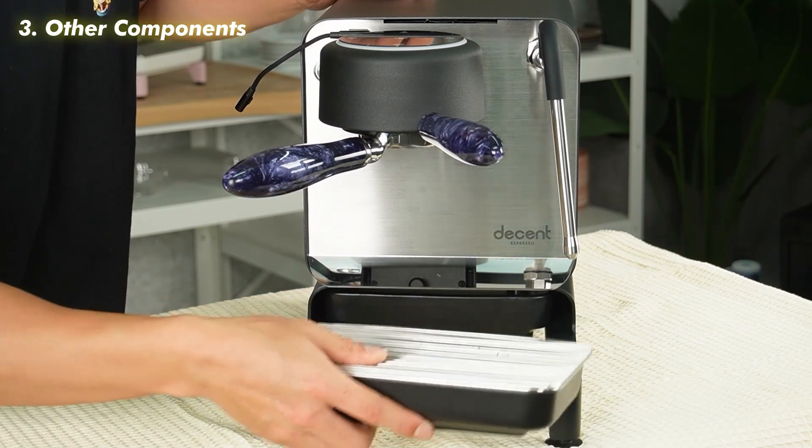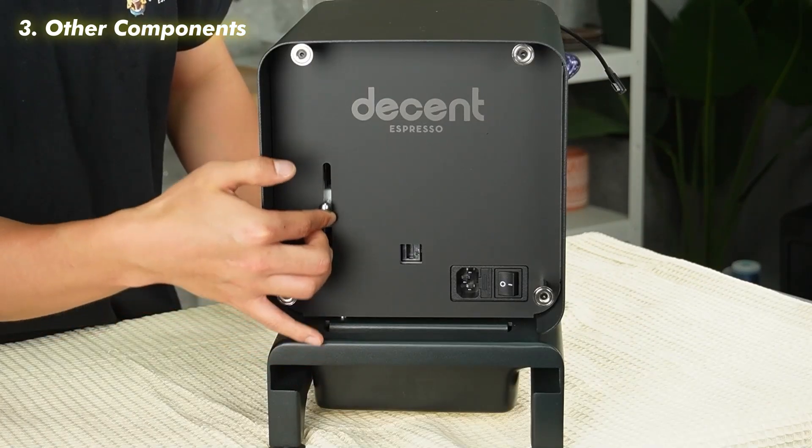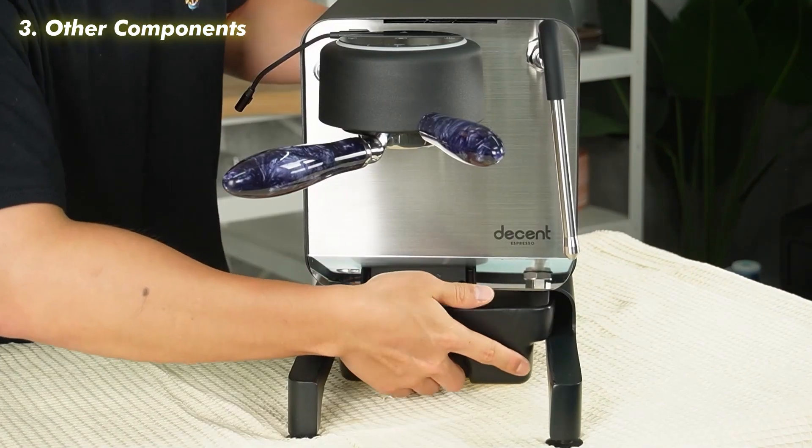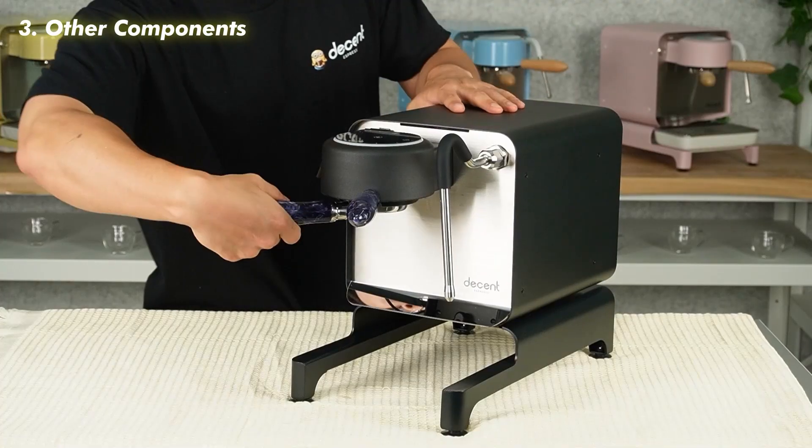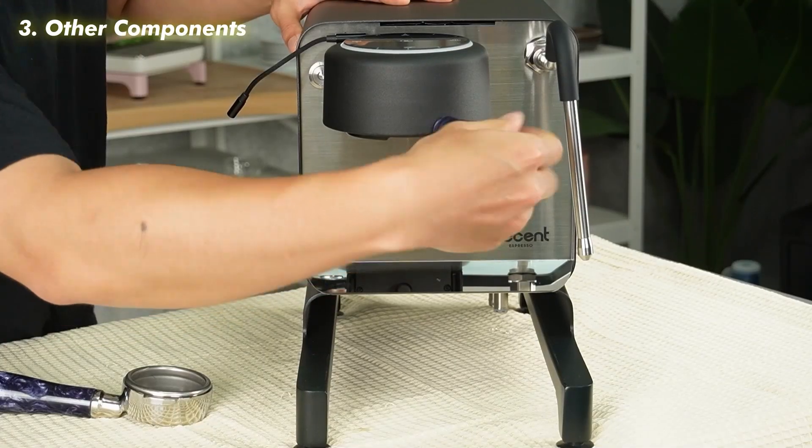You need to remove the drip tray and drip tray cover, lift the lever on the back of the machine and drag the water tank out and remove it, and remove the portafilter and group head handle as well.